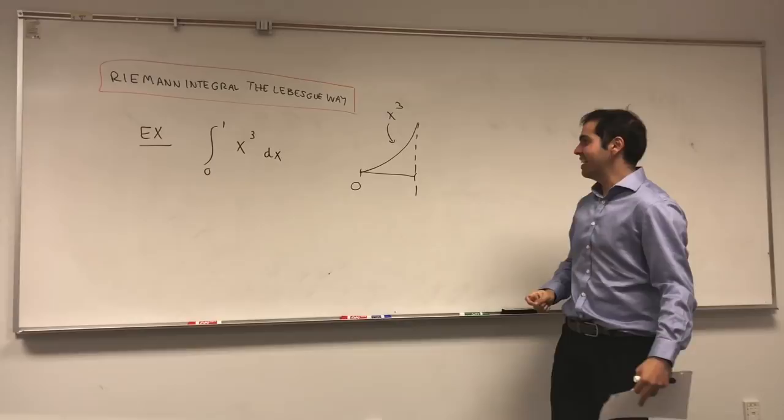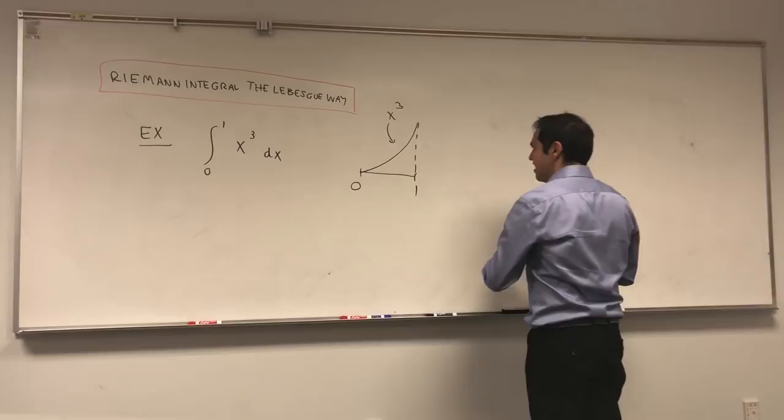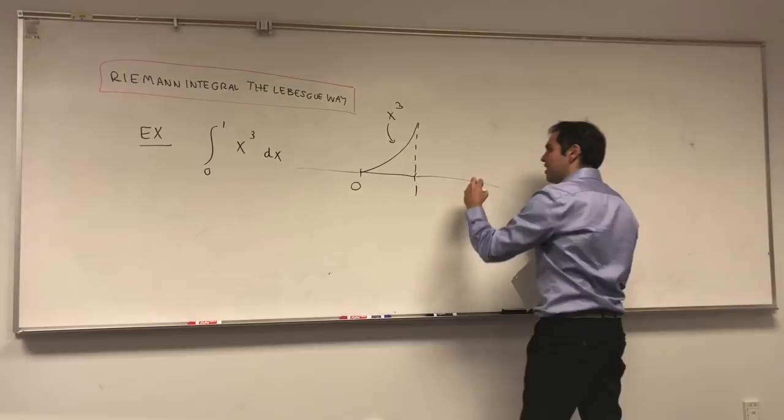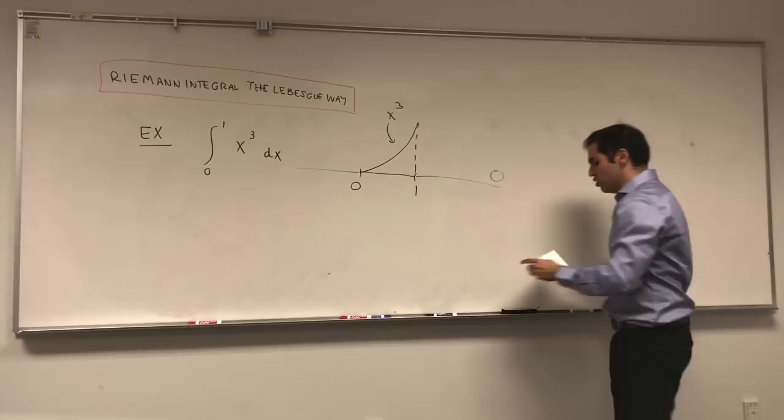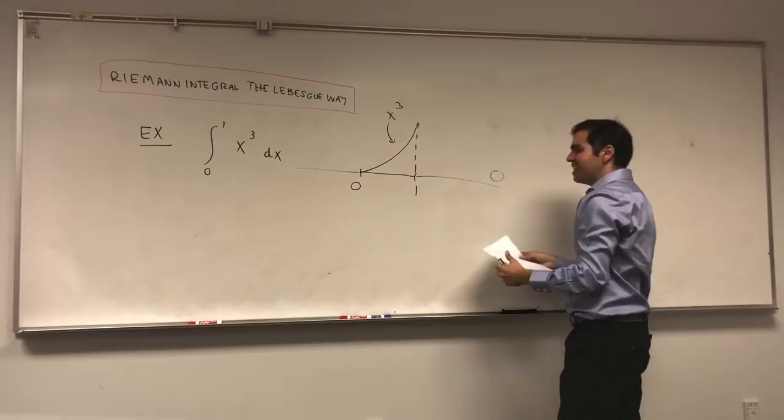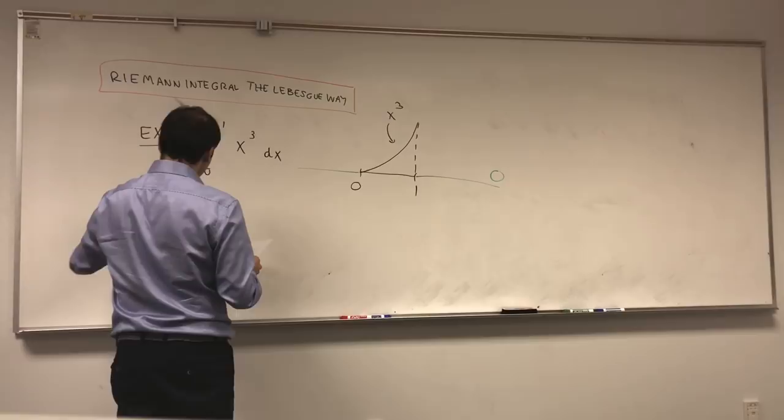Fortunately, what do we know about this function? Well, it's in fact zero outside of finite set. It's zero outside zero comma one. So what we really need to do is find a limit of simple functions that converges to x cubed. That's like step two of Lebesgue.